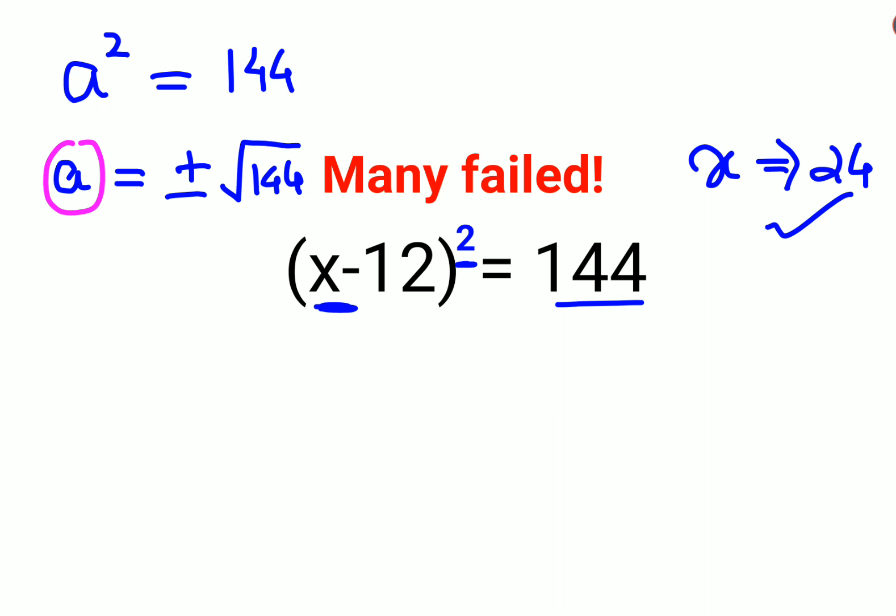So since here we have 144, and we need to find the value of x, the first thing you can do is take the square root. So that would be plus or minus root of 144, which gives you 12.